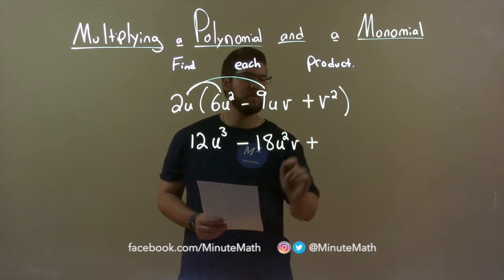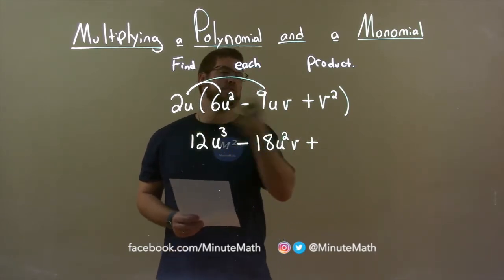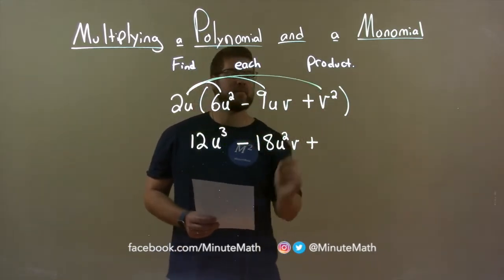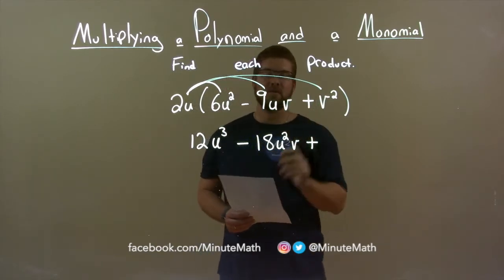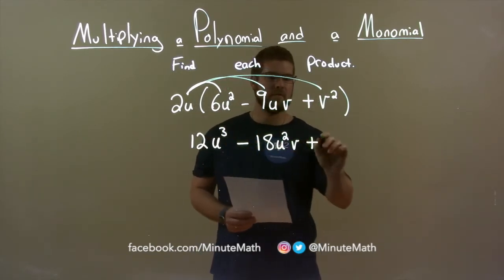Last terms are separated by addition, and we multiply 2u times v squared now. There's no coefficient, or the coefficient in front of v squared is 1, so 2 times 1 is 2.